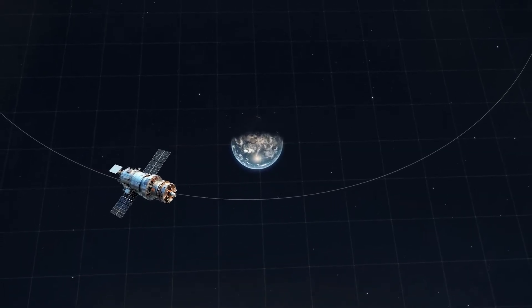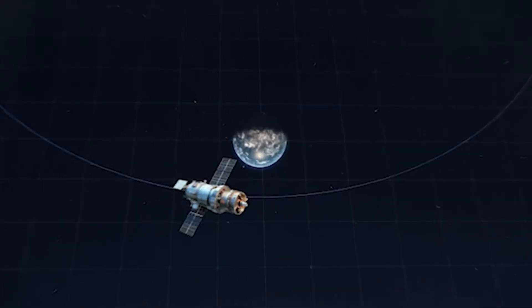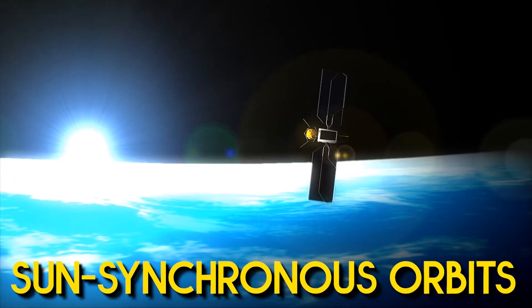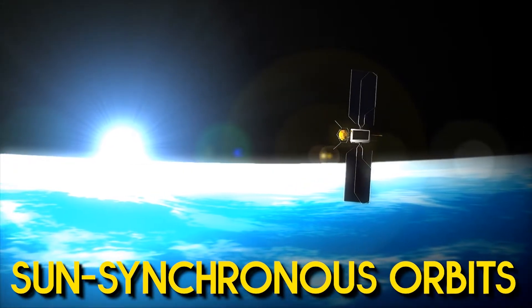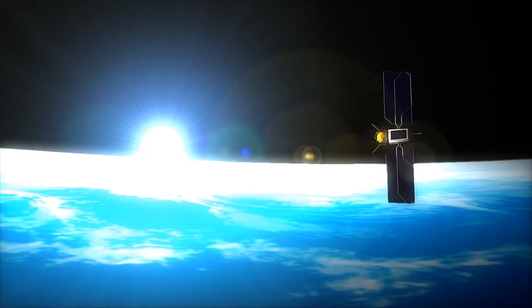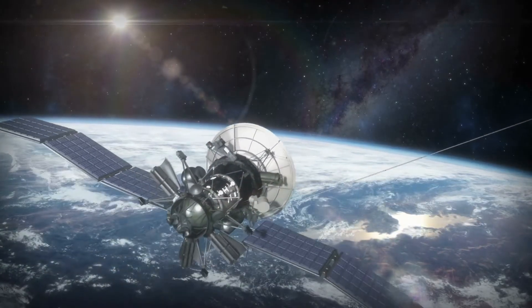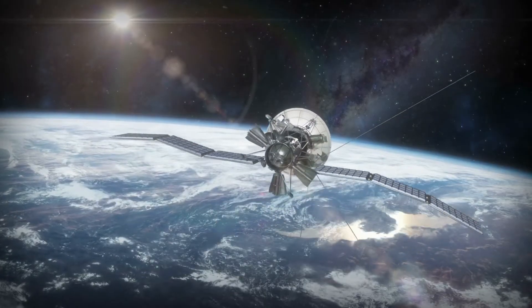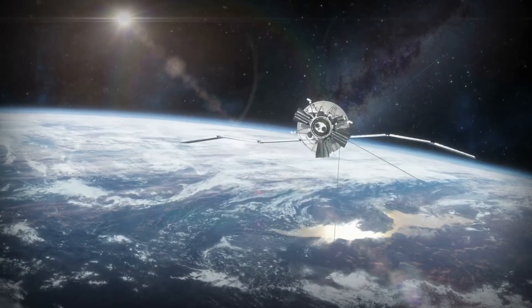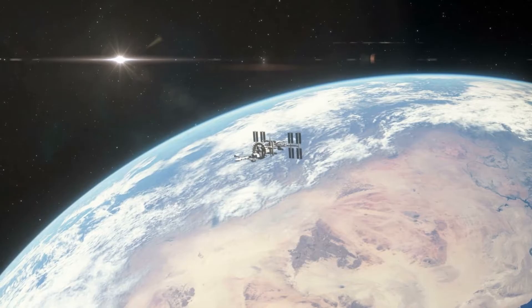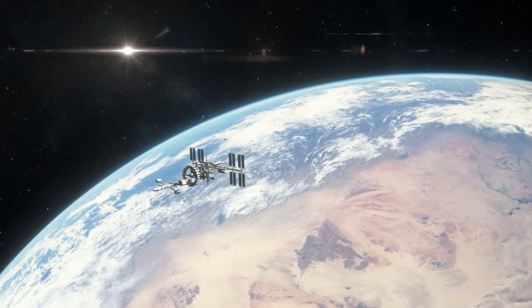Sun-synchronous orbits, a type of low Earth orbit, maintain a constant position relative to the Sun, ensuring that the satellite passes over the same area in the same local solar time each orbit, which is helpful for consistent lighting when imaging Earth.